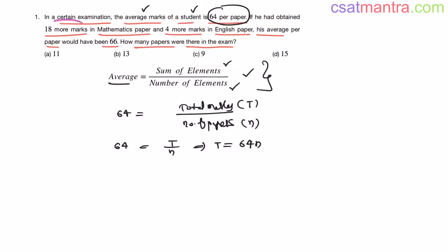Now, if he had obtained 18 more marks in mathematics paper. Initially, his total score is T. Now, 18 more marks. So now the total score would be T plus 18 and 4 more marks in English paper. Now, his total score would be T plus 18 plus 4. So if he had obtained 18 more marks in mathematics paper and 4 more marks in English paper, his average would have been 66.